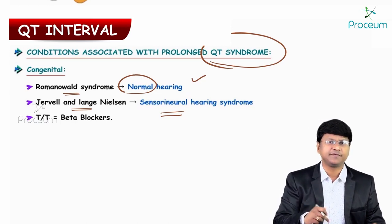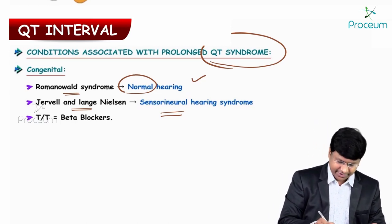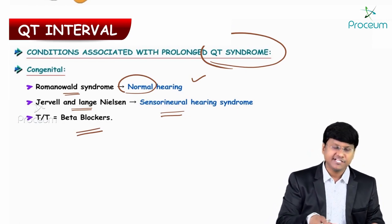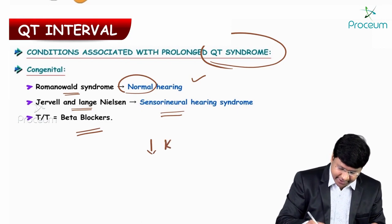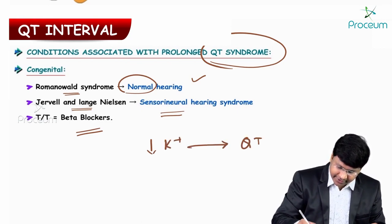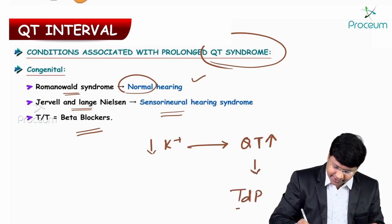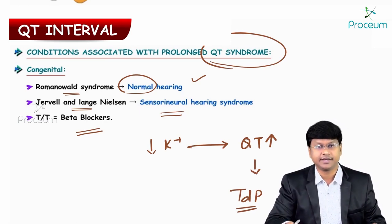The treatment for patients with congenital long QT syndrome is beta blockers. In these patients, if there is superimposed hypokalemia, they will develop prolonged QT interval and land up in what is called torsades de pointes, which is nothing but polymorphic ventricular tachycardia.